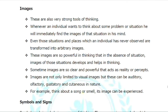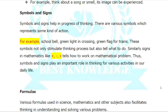Symbols and signs help in the progress of thinking. There are various symbols which represent some kinds of action — for example, a school bell, green light at a crossing, and a green flag for trains. These symbols not only stimulate the thinking process but also tell what to do. Similarly, signs in mathematics like plus, minus, and multiply tell how to work on mathematical problems.